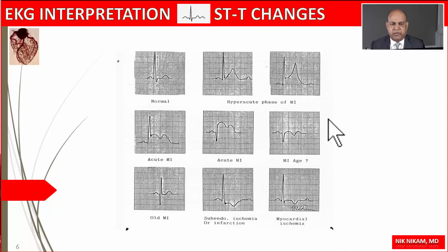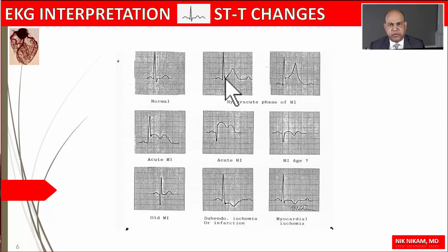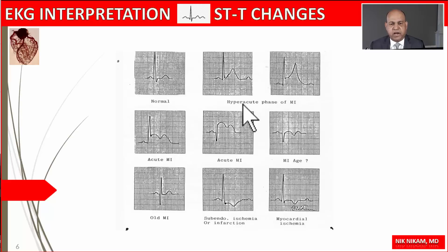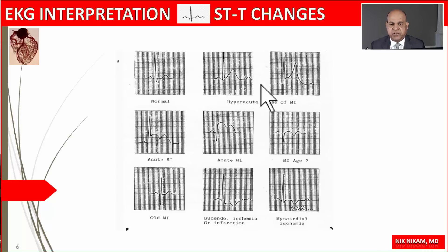I would strongly recommend you watch the video on myocardial ischemia and infarction. When there is an acute occlusion of a coronary artery, there is elevation of the J-point with straightening of the ST segment, which blends with the T wave becoming tall and peaked. This is the earliest change, known as the hyperacute phase of acute myocardial infarction.